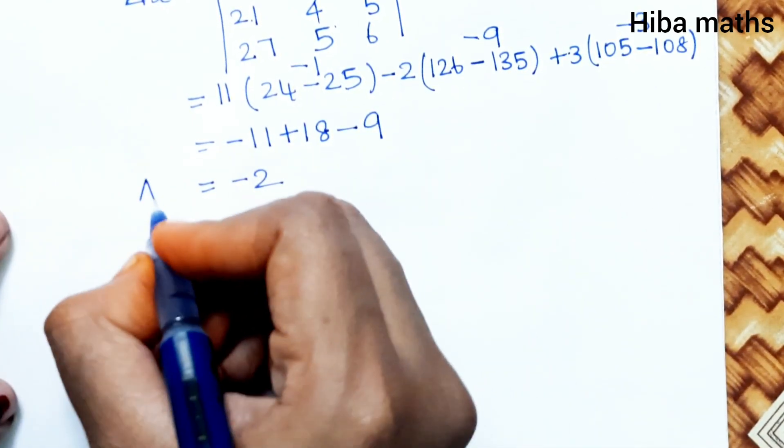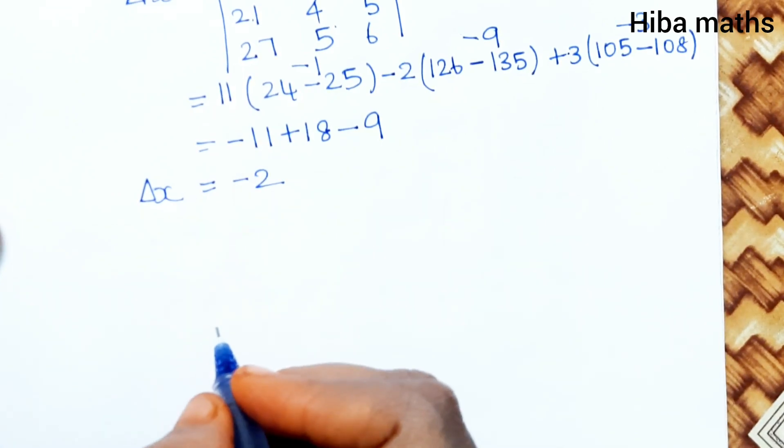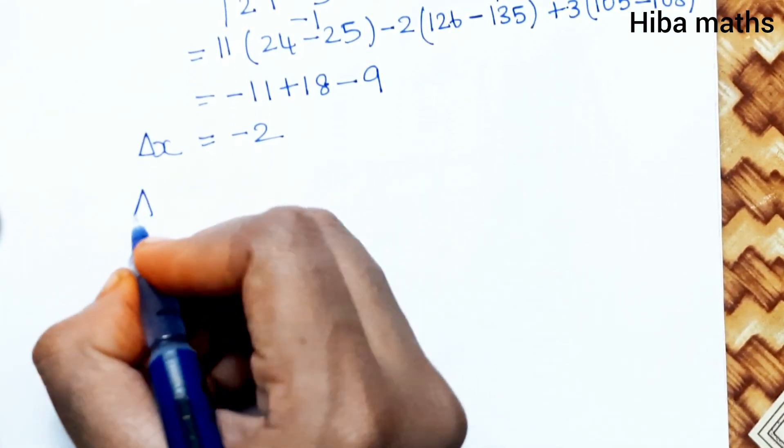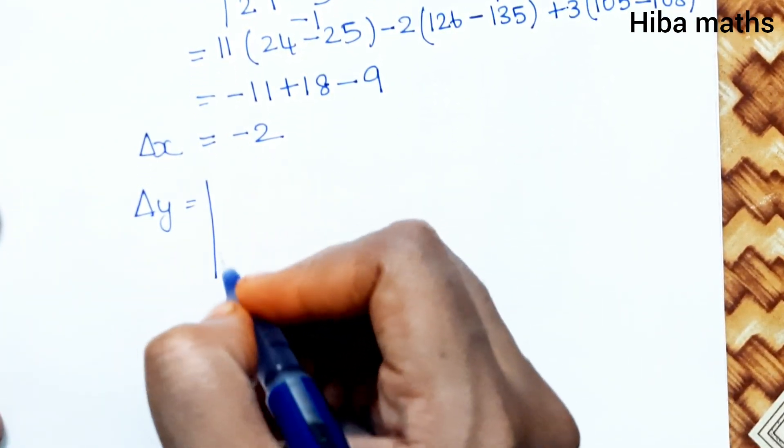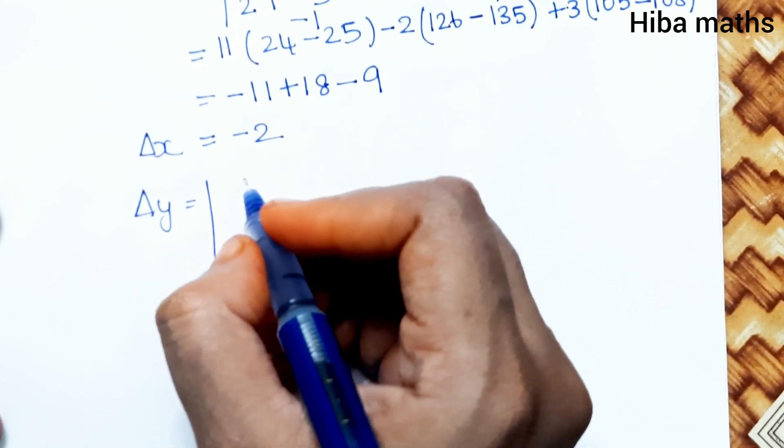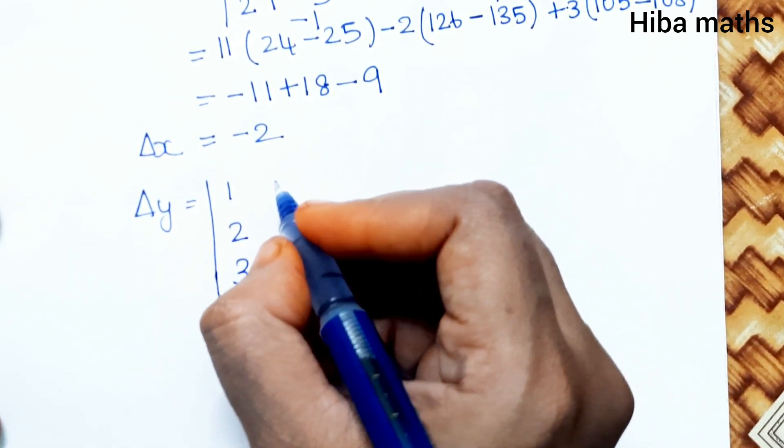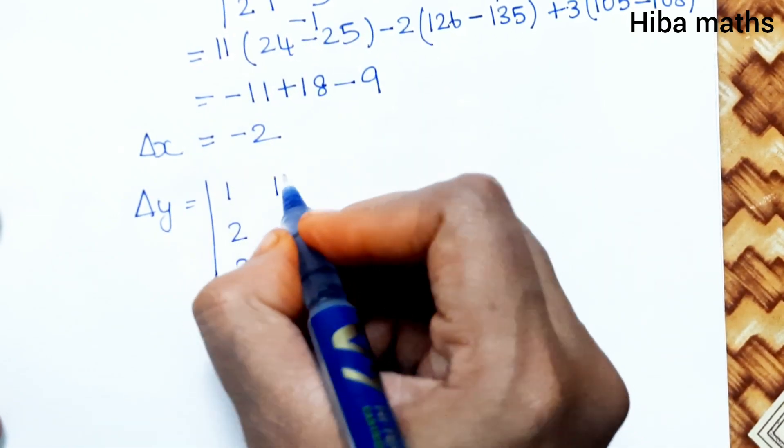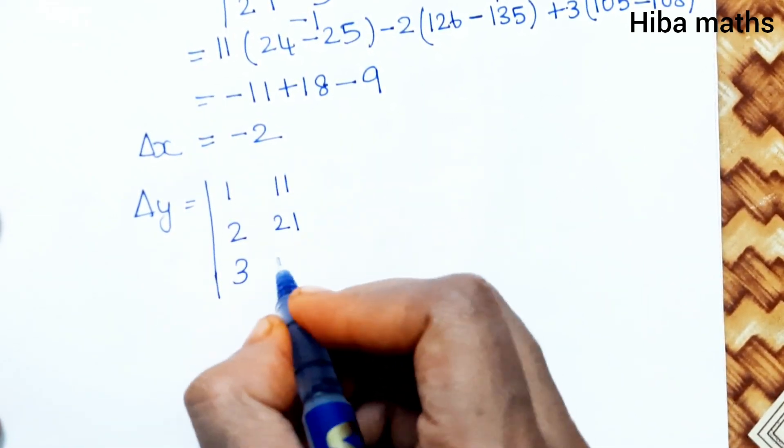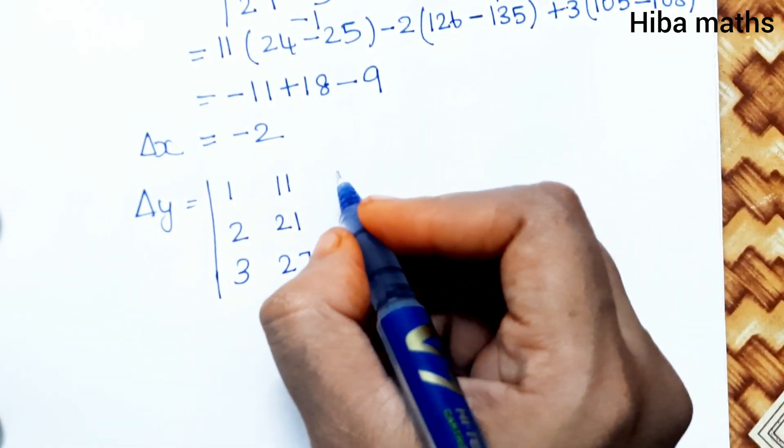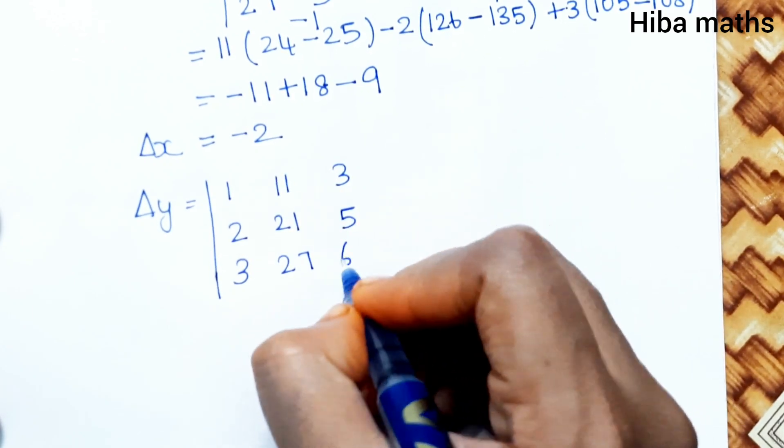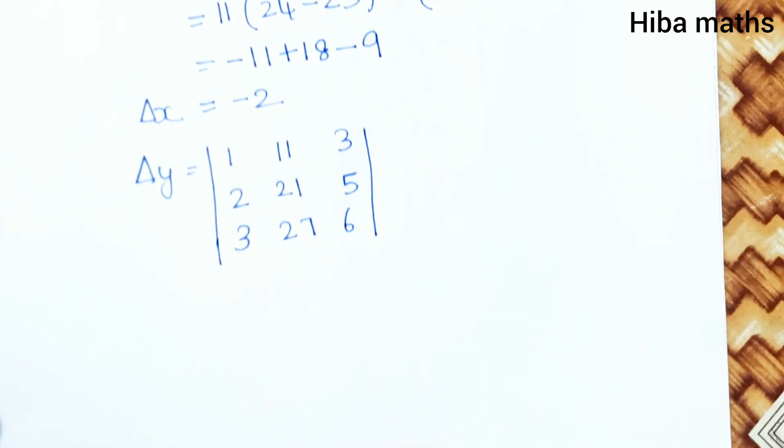Del Y value: Replace the second column with 11, 21, 27. The matrix is: first column 1, 2, 3; second column 11, 21, 27; third column 3, 5, 6. Now we expand.